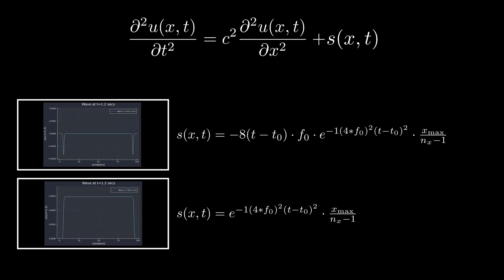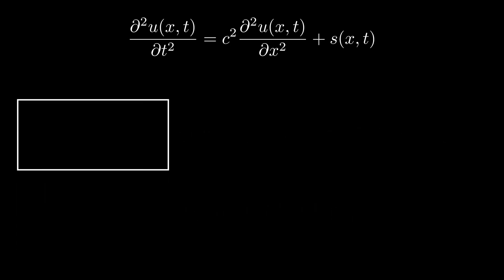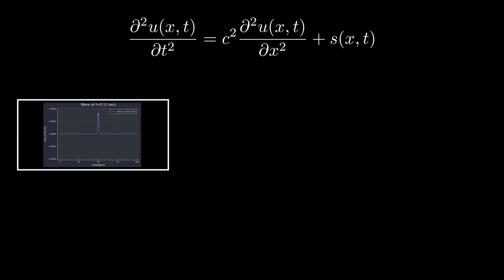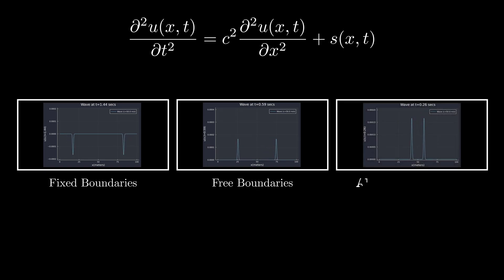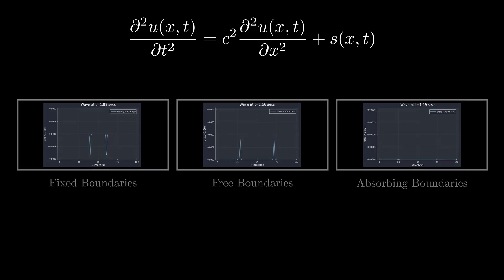Here is an example of two different source functions. One thing to remember is that the PDE is typically defined for the interior of the domain and not the boundaries. What this means is that I have to explicitly define the solution at these boundaries, given an initial state of the system. What I can do is clamp the two ends fixed, or make both ends free, or even add some kind of cushion to absorb the energy. But let's not get too much ahead of ourselves and look into how to actually solve this thing.